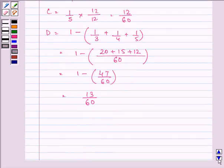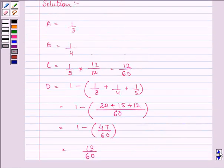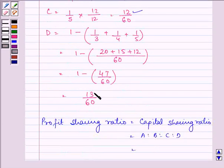So we can see that the profit sharing ratio is equal to the capital sharing ratio. And since the denominators of A is to B is to C is to D are all same, we will take the numerator that is 20 is to 15 is to 12 is to 13. This is our profit sharing ratio.